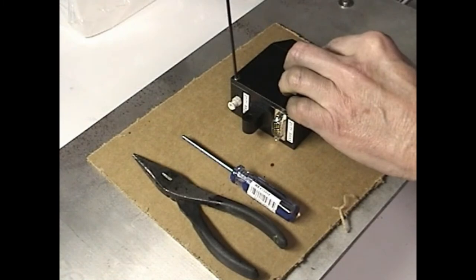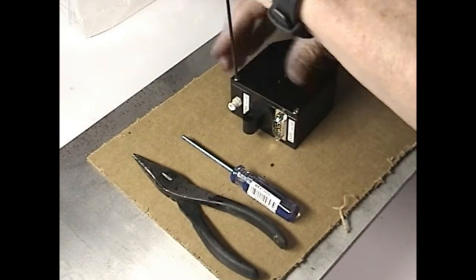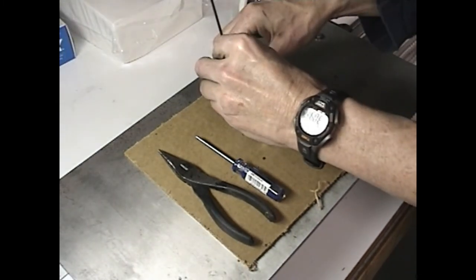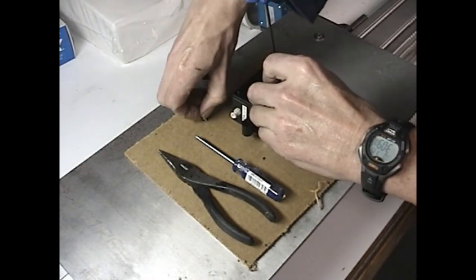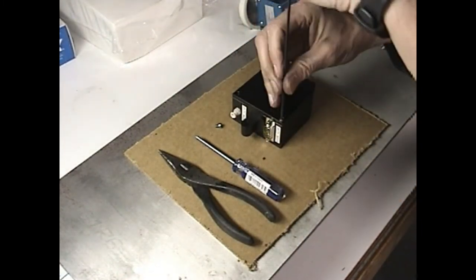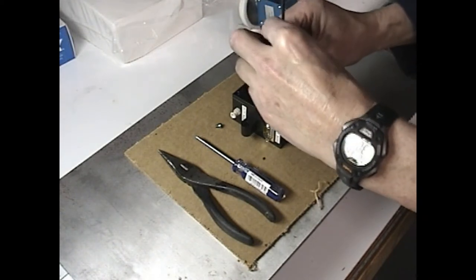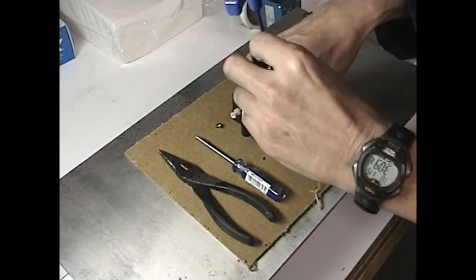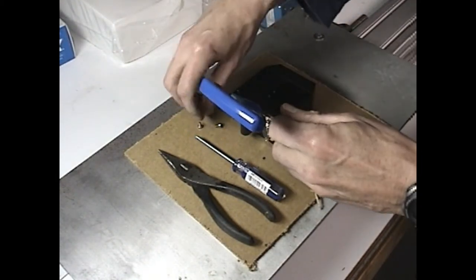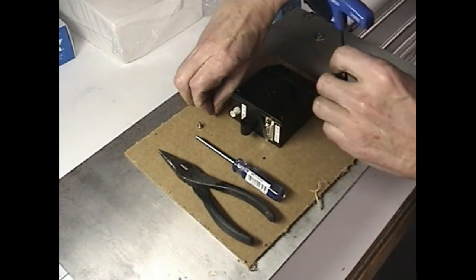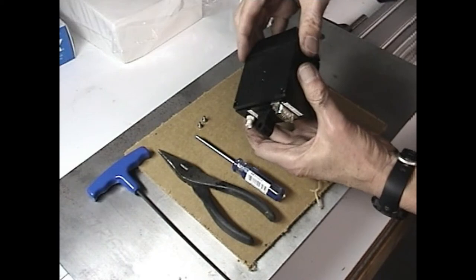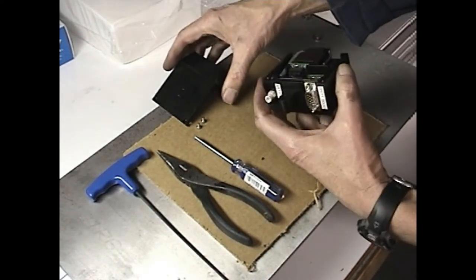Should you find that you have a damaged print engine, you will have to replace it. First you will need access to the print engine. To get access, remove the two small screws and the printhead case. Gently open the printhead case.